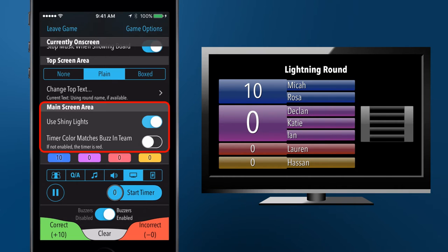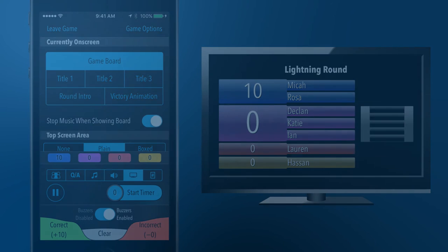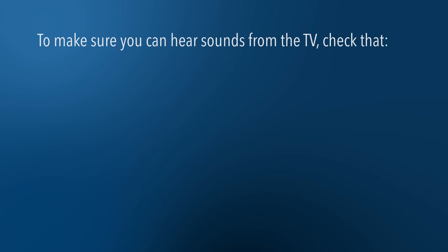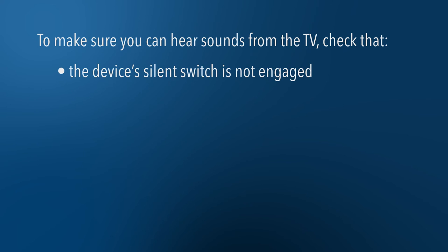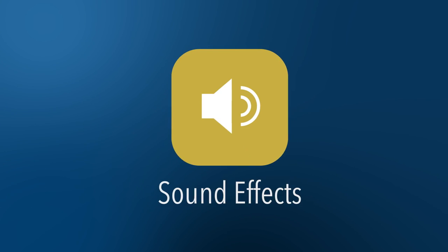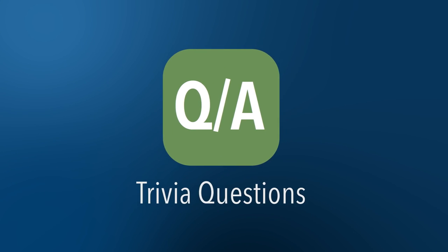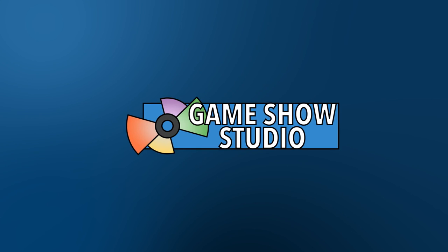Experiment with the other main board appearance options to customize your game show. While connected to an Apple TV, sounds and music will be played from the TV. Make sure that your device's silent switch is not on, and that the volume is loud enough on both your iOS device and your television. The television display is just one of the many features that helps you create an immersive trivia experience in your very own Game Show Studio.